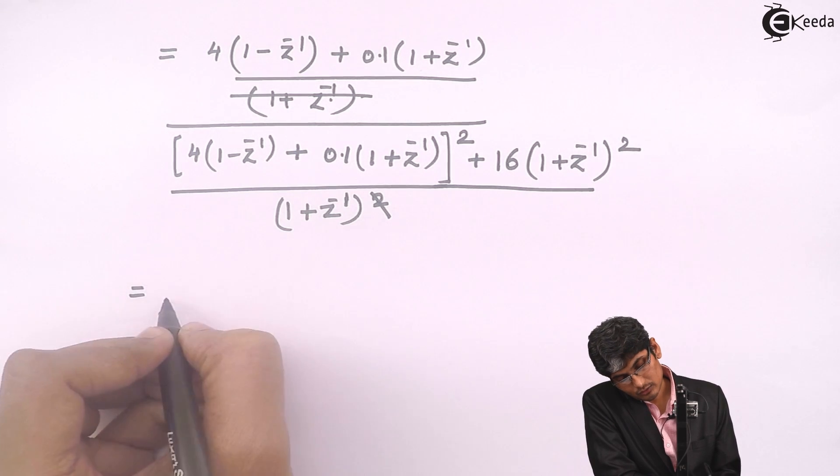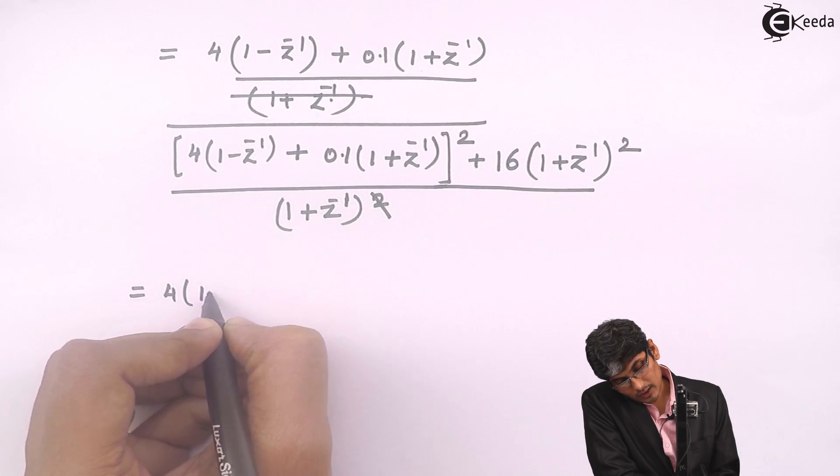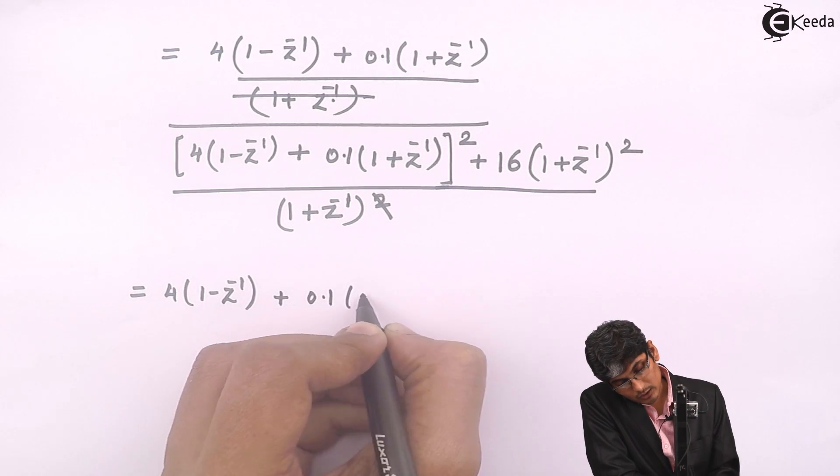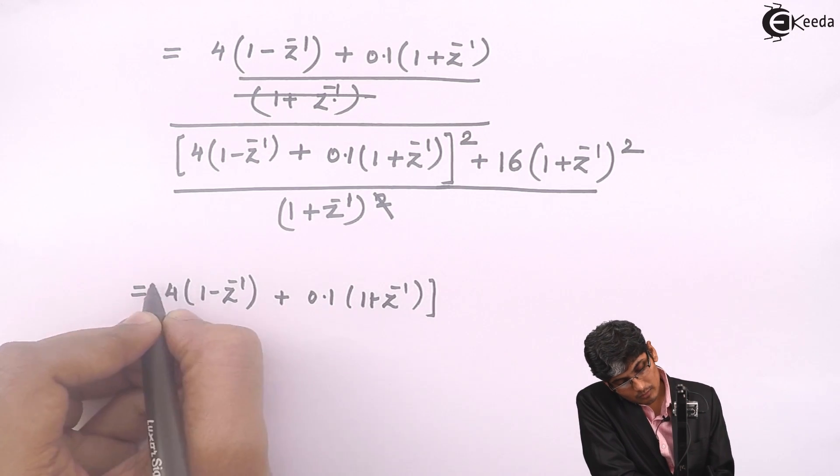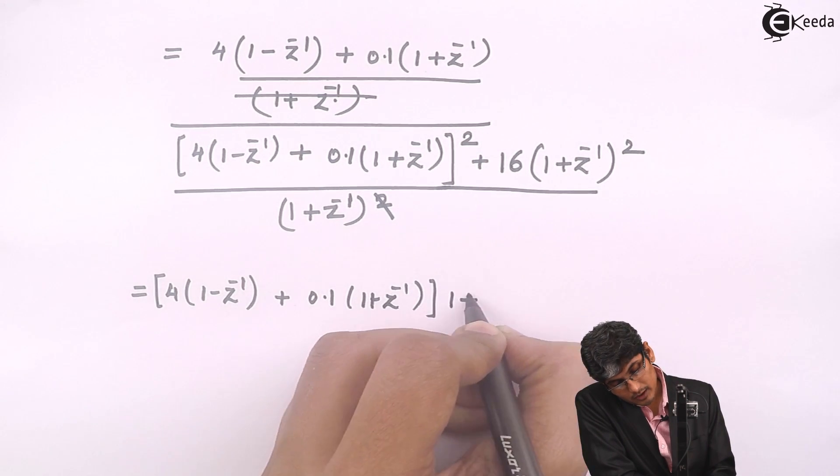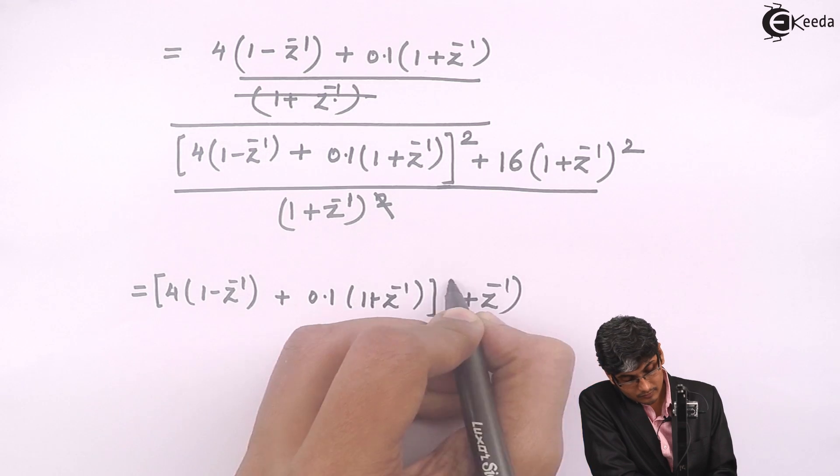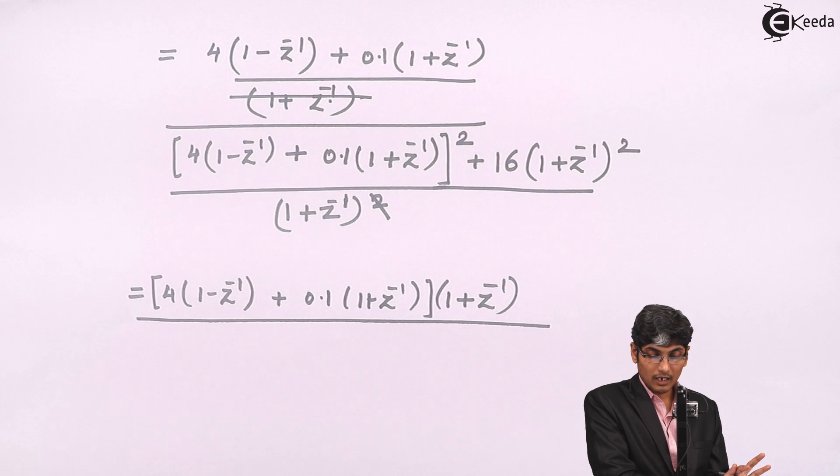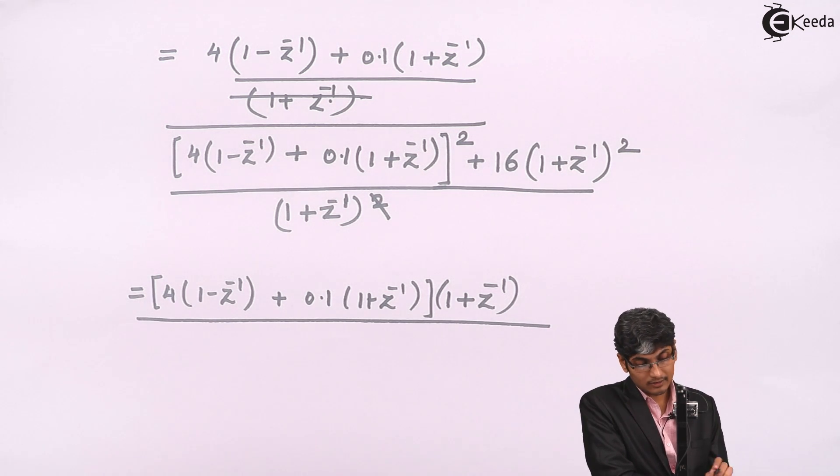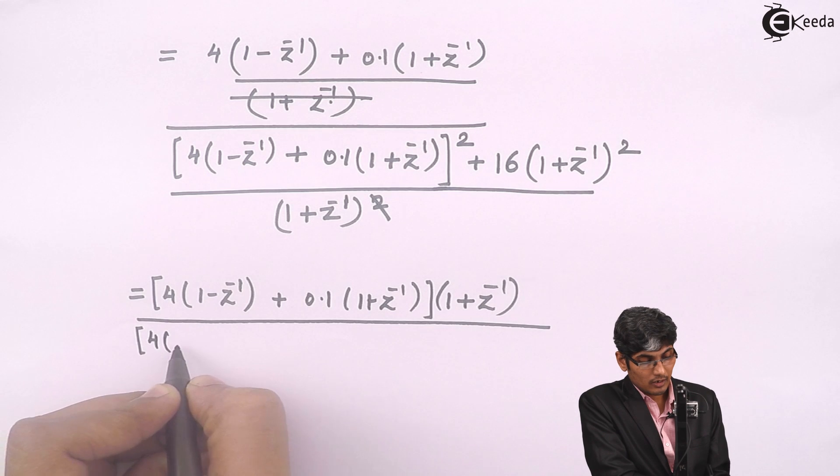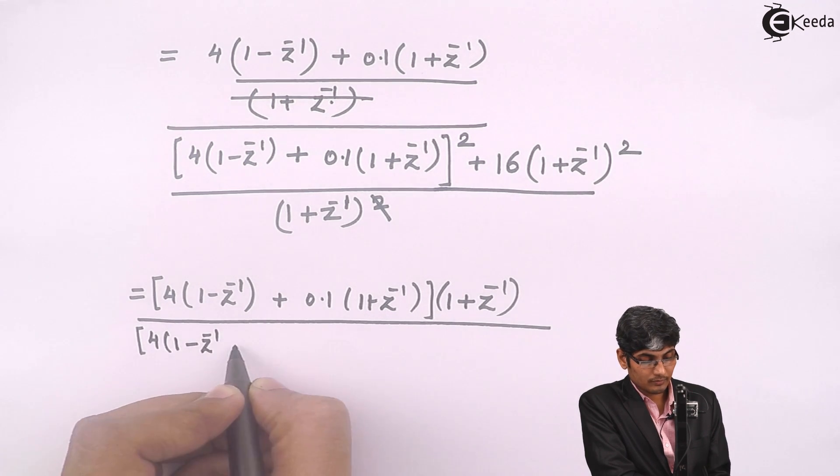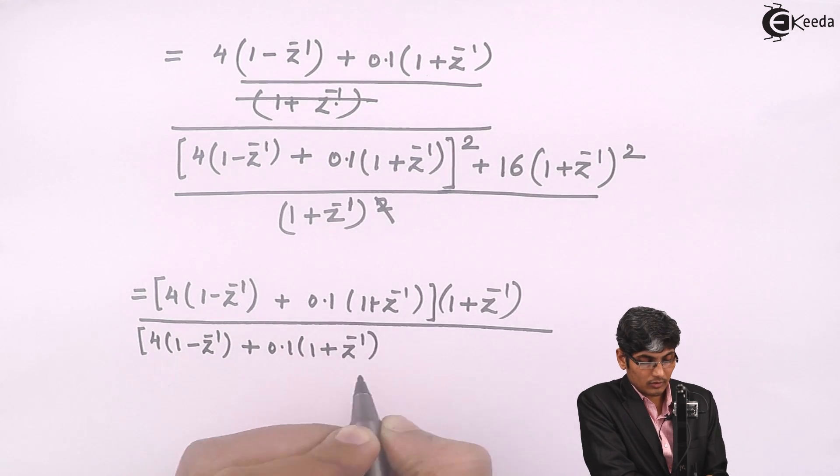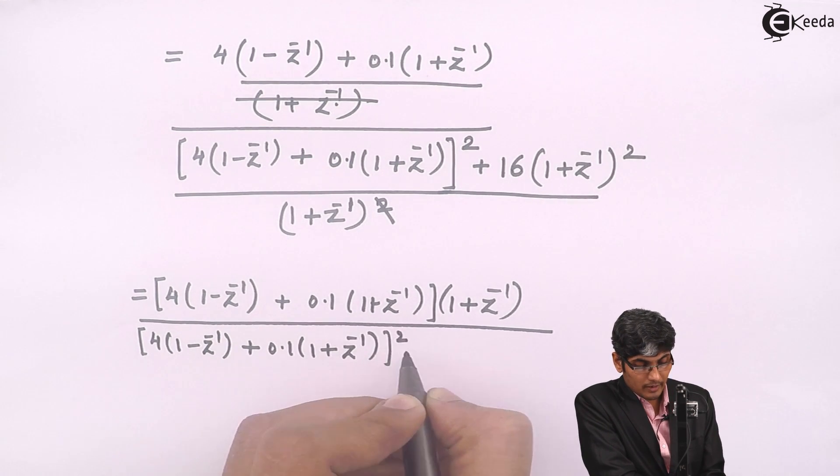So it will be now 4 into 1 minus Z inverse plus 0.1 into 1 plus Z inverse the whole multiplied by 1 plus Z inverse. So it will be now 4 into 1 minus Z inverse divided by here either you can open it up now or you can keep it as it is. So this will be 4 into 1 minus Z inverse plus 0.1 times 1 plus Z inverse the whole square plus 16 into 1 plus Z inverse the whole square.